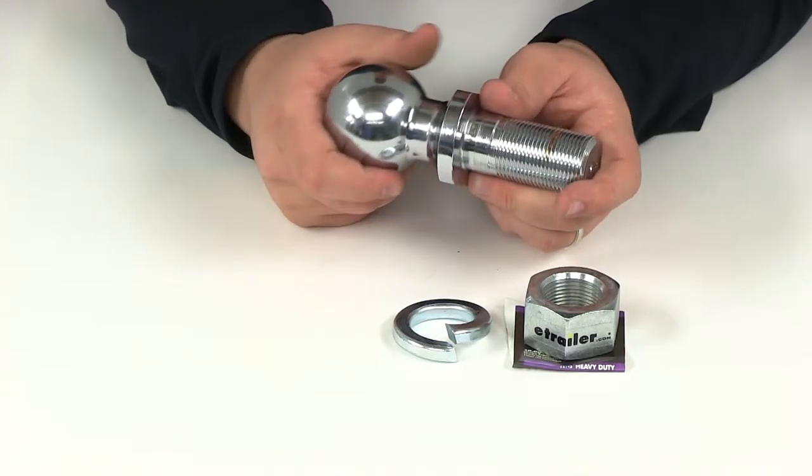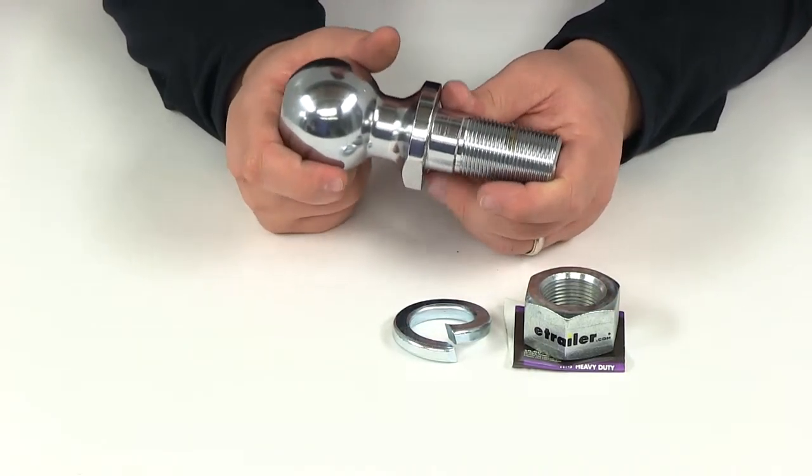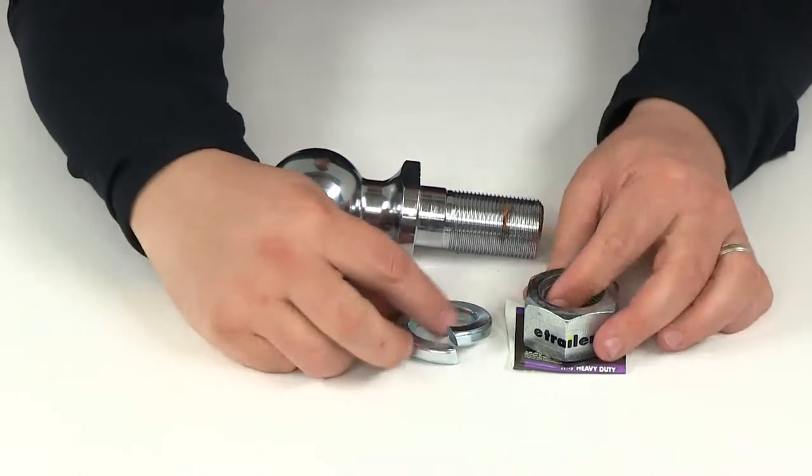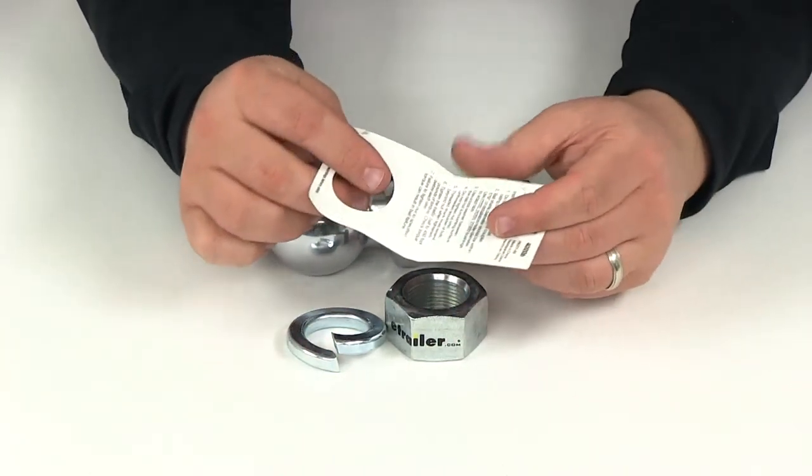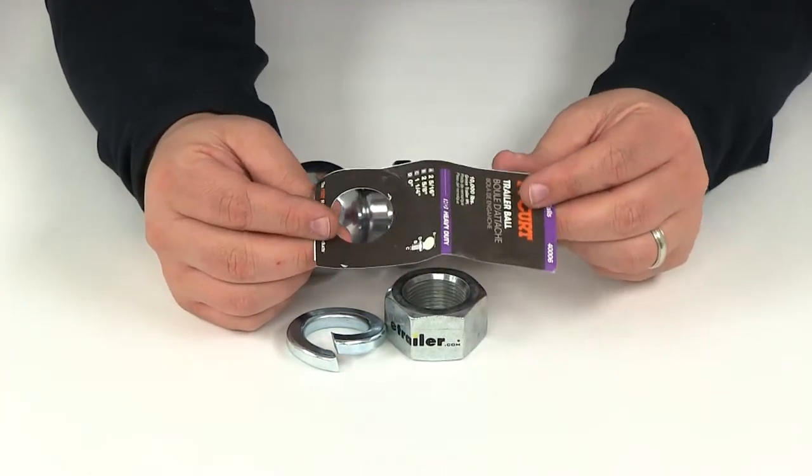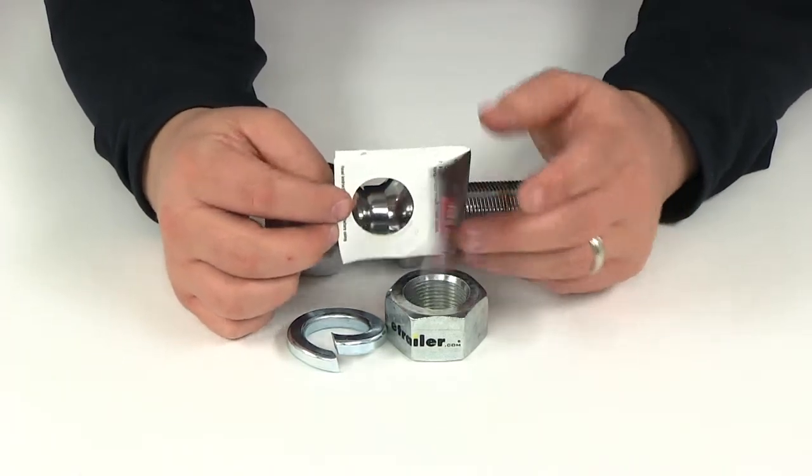So the hitch ball will need to be torqued to specifications listed by the manufacturer. You can find all that information on the tag that's going to come attached to the trailer hitch ball. You just want to make sure that you remove this tag before your installation.